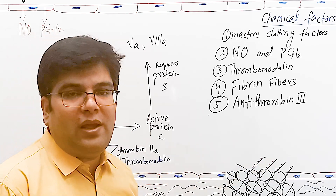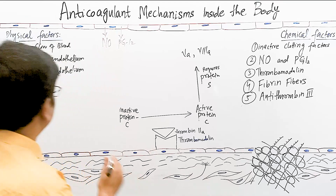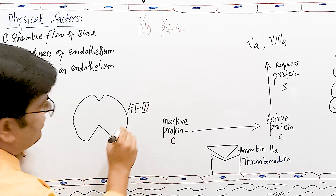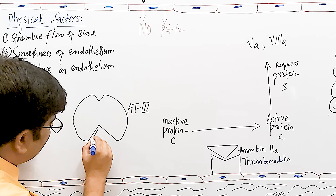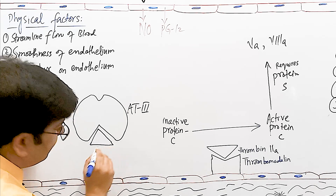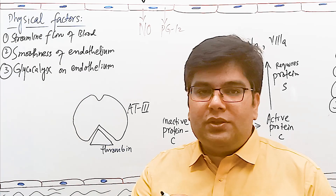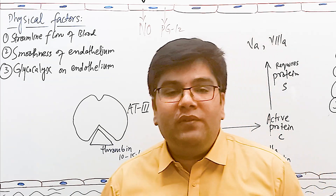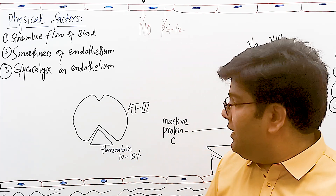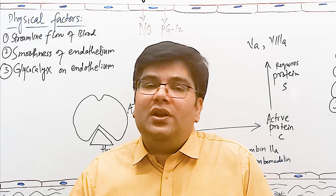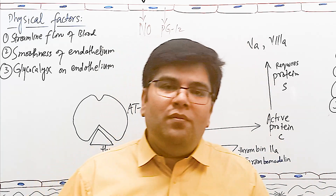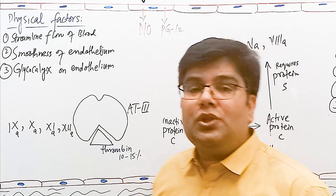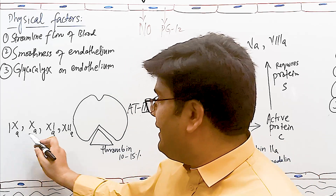Another important factor is antithrombin 3 (AT3). This antithrombin 3 removes the remaining 10 to 15 percent of thrombin which does not adsorb onto the surface of fibrin fibers, contributing to anticoagulation. Antithrombin 3 binds with thrombin (activated clotting factor number 2) in the blood. The antithrombin 3-thrombin complex also inactivates already-activated clotting factors number 9, 10, 11, and 12.